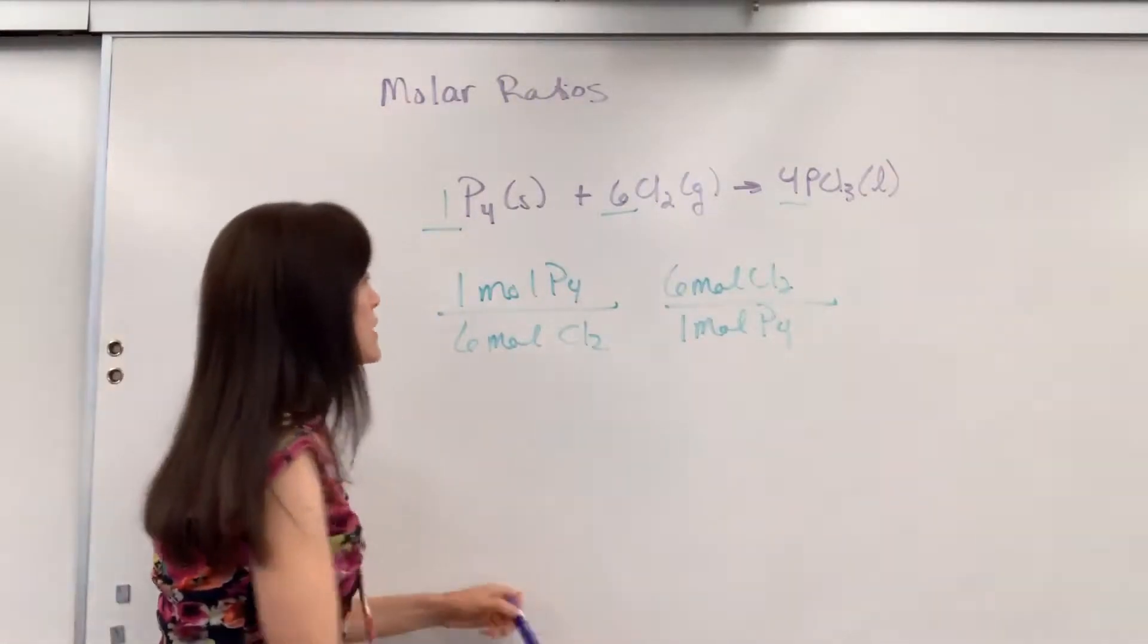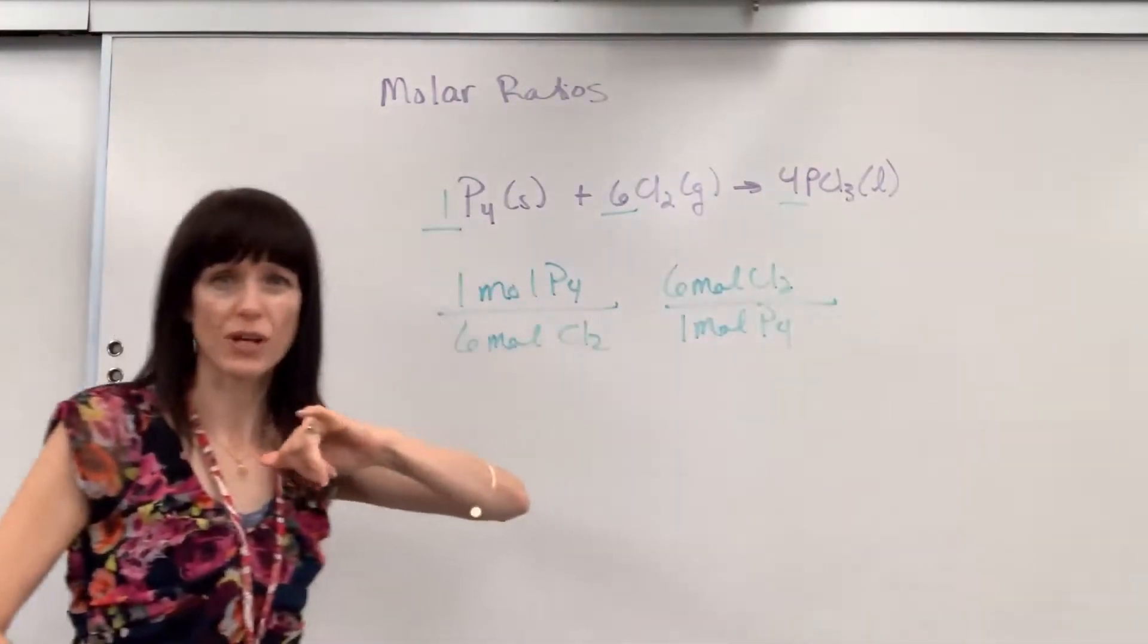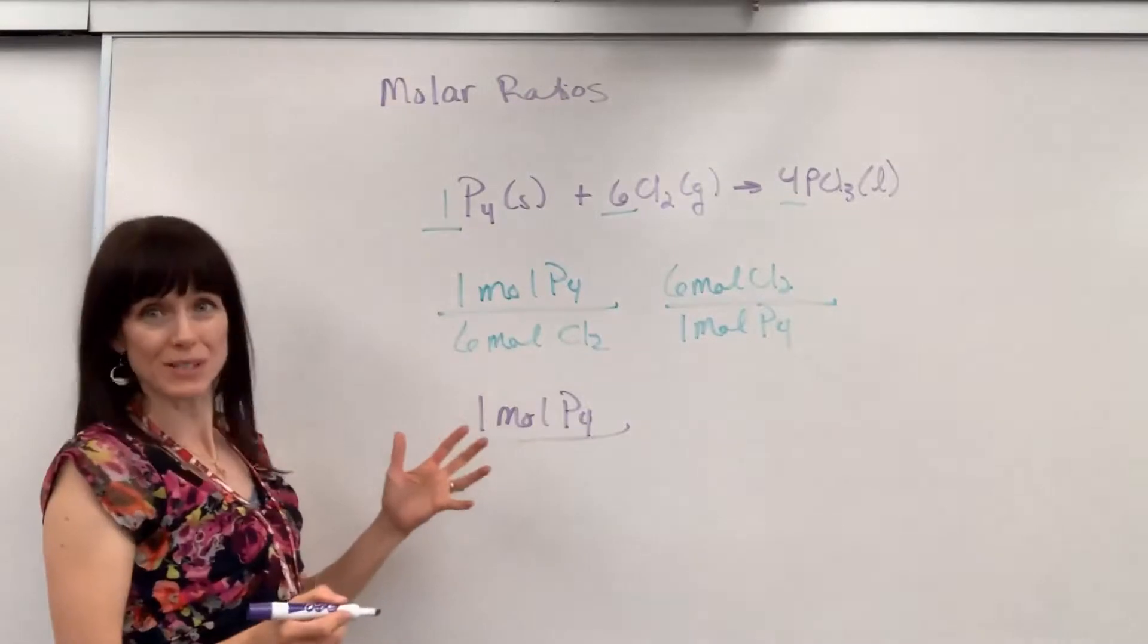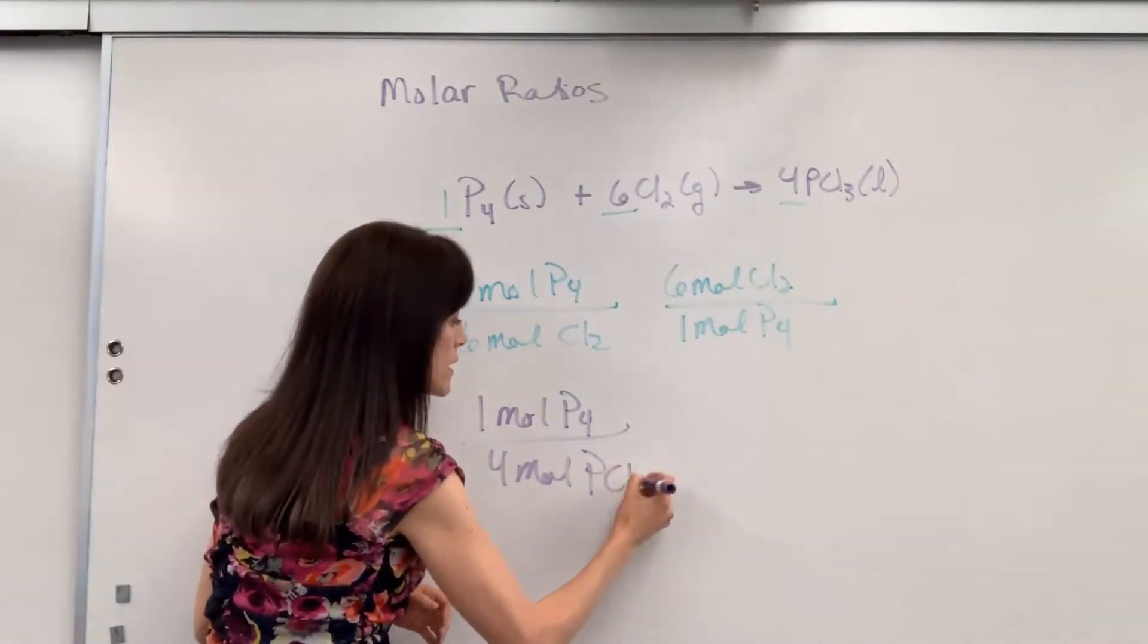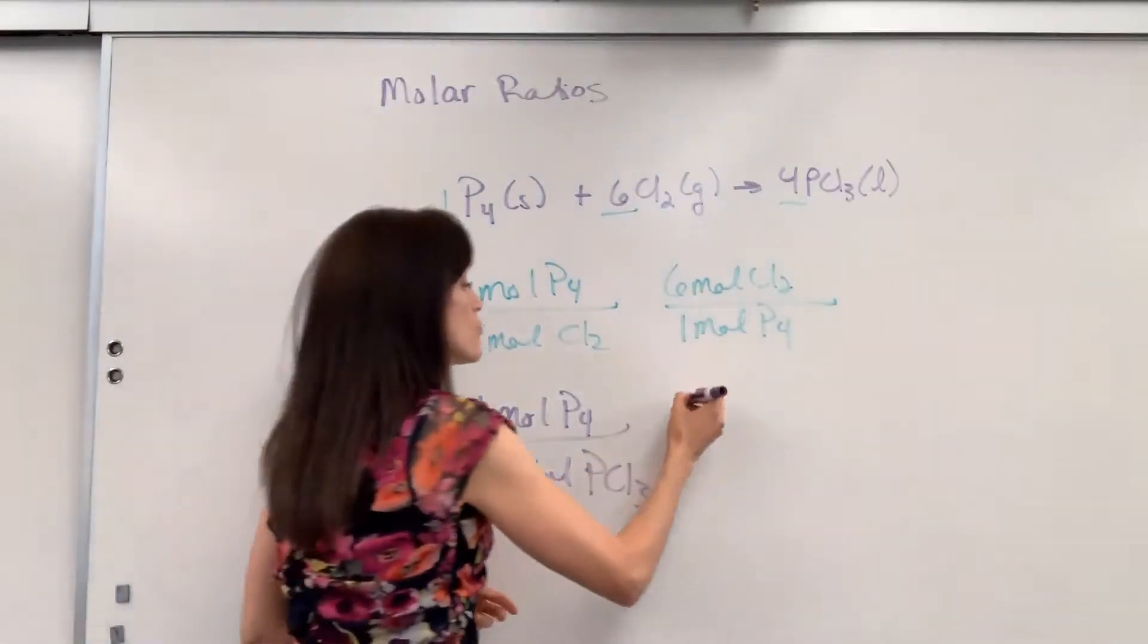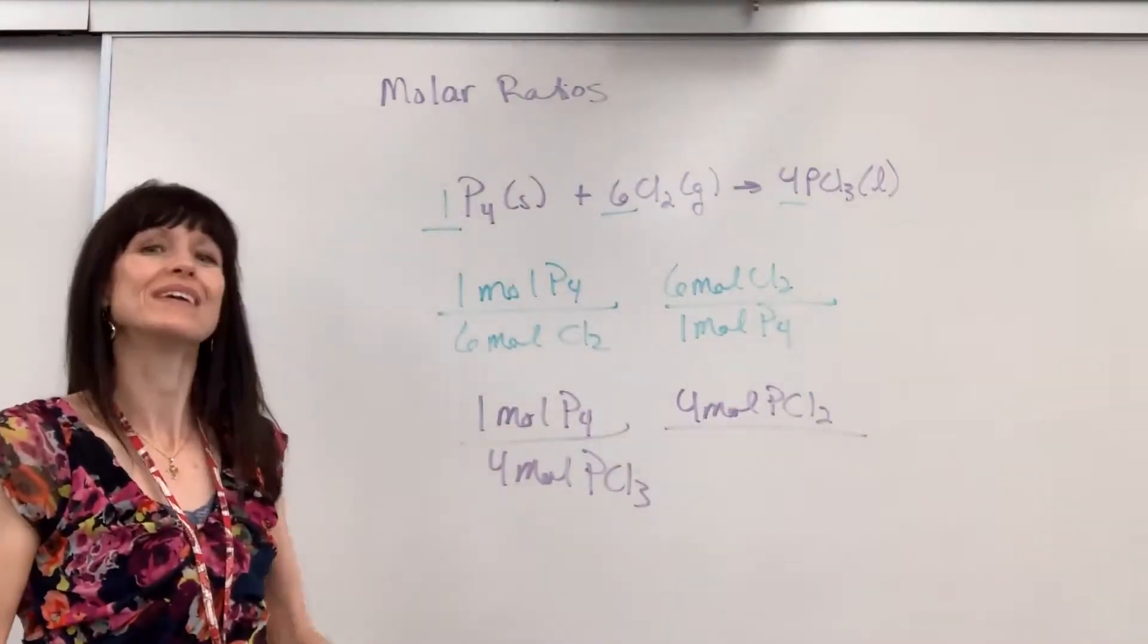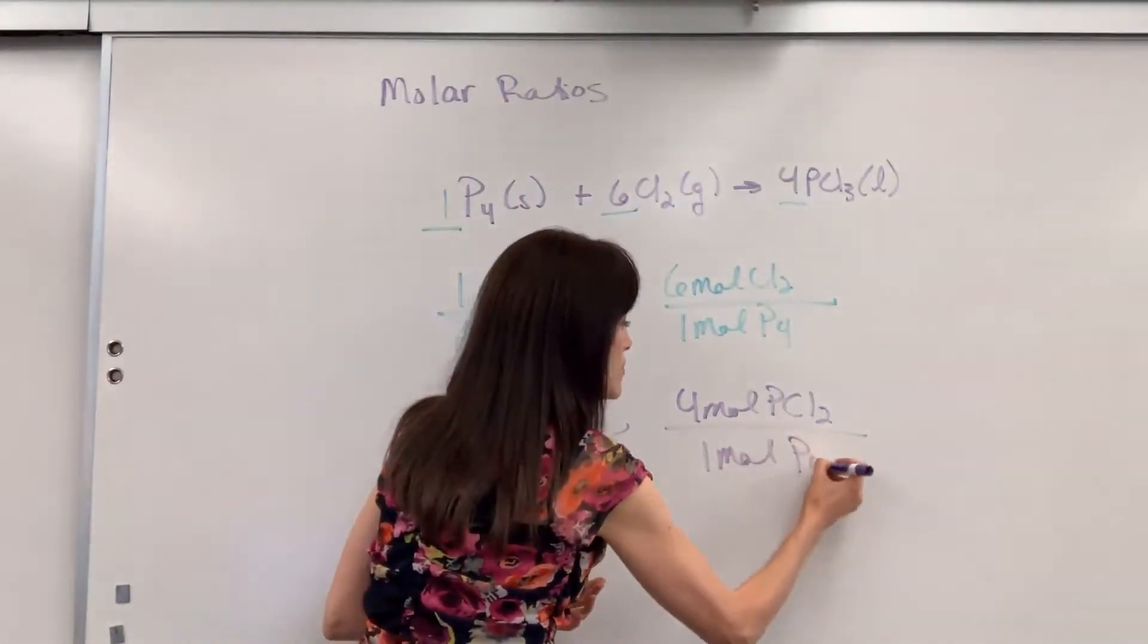Let's do another one. Let's take the phosphorus and compare it to the phosphorus trichloride. So if we have one mole of P4, we know that's going to produce four moles of the phosphorus trichloride. Now equally true is the reciprocal of this. Four moles of phosphorus trichloride, we know that came from one mole of the phosphorus.